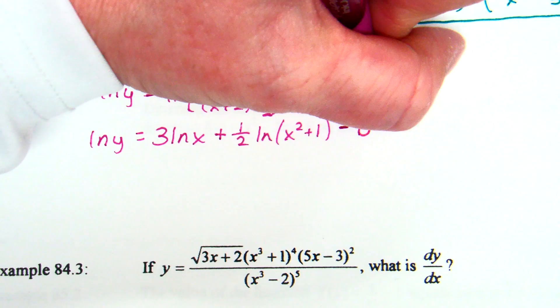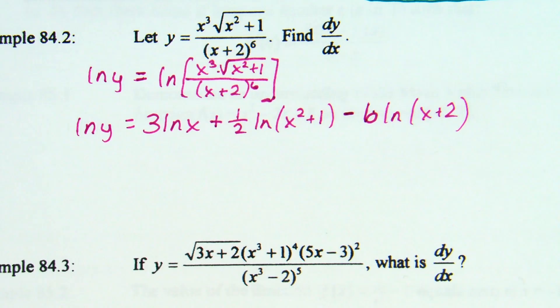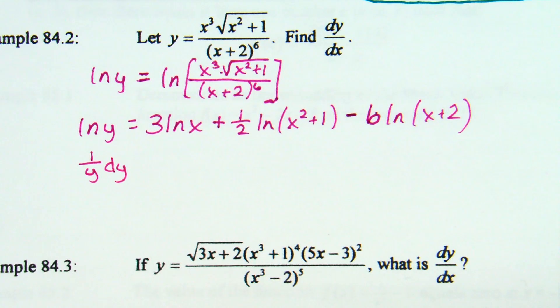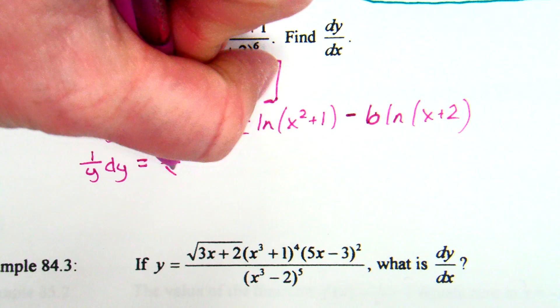Take the derivative of each term. Derivative of natural log of y is 1/y · dy. Equals: for 3·ln(x), I agree — 3/x · dx.